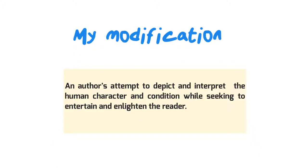So with that brief overview of the history and the development of novels, I'd like to modify the dictionary definition in my way. And I would say that a novel really is an author's attempt to depict and interpret the human character and condition, while seeking to entertain and enlighten the reader. And I think there's really four ways in which a novel is distinctly different from other types of fiction or other types of writing, and I think that's what we need to focus on when we try to define what really constitutes a novel.